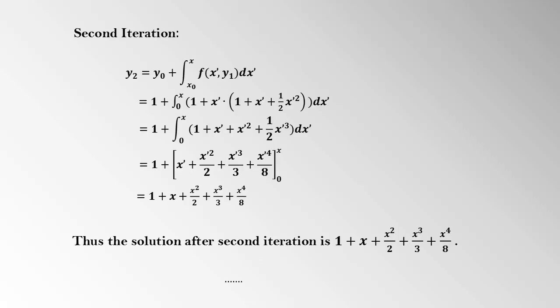The solution after the first iteration is 1 + x + x²/2.